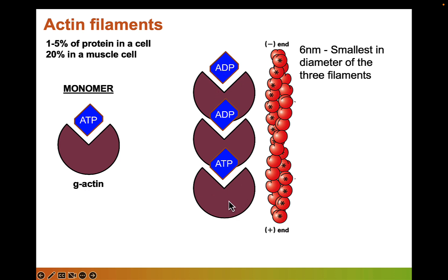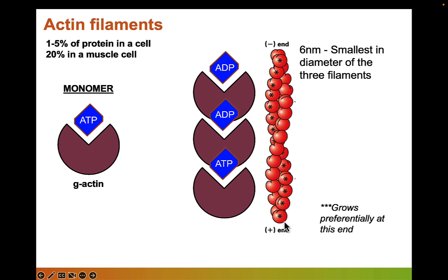Actin filaments grow in a chain and wrap around each other. This double helix is approximately six nanometers in diameter — the smallest of all three filaments. New monomers can be added at either end, the minus end or the plus end, but growth preferentially happens at the plus end. This is because ATP-actin has not yet been hydrolyzed at that site, so the filament grows much more quickly from the plus end.